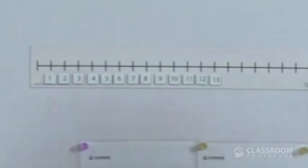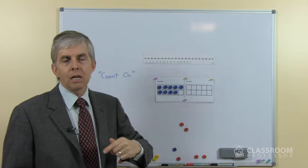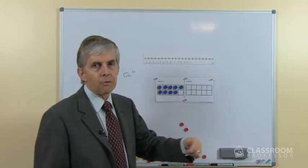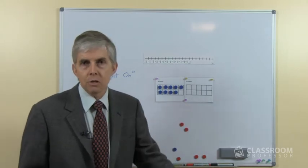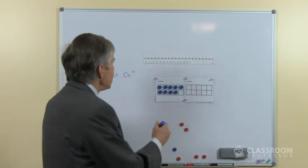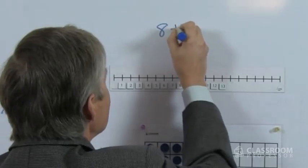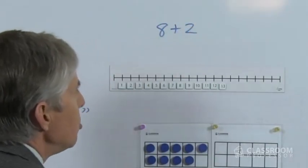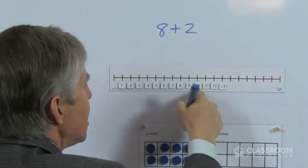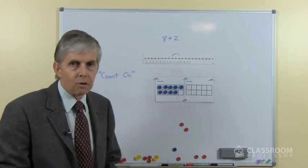So looking at the number line to start with, it's a straightforward idea that the counting numbers are in a sequence and if we're counting on by 2 or if we're adding 2 to a number, we can look at the sequence of numbers and simply see where's 2 from there. So for example, if we started with 8 and we had the number fact 8 plus 2, we could look at the number line and see that 2 beyond 8 is 10, and so that's not very difficult.